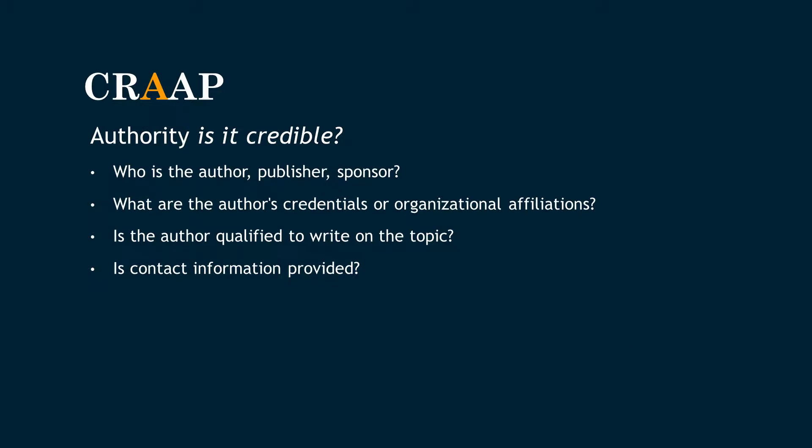The first A is for authority. Authority deals with who — who is the author and what are their credentials? You can look at an author's education level and how long they have worked in the field to determine if they are qualified to write on the topic. Also, authority is contextual. So if an author is considered to be an expert in a specific discipline, like sociology, that doesn't mean they are an expert in another discipline, like biology.